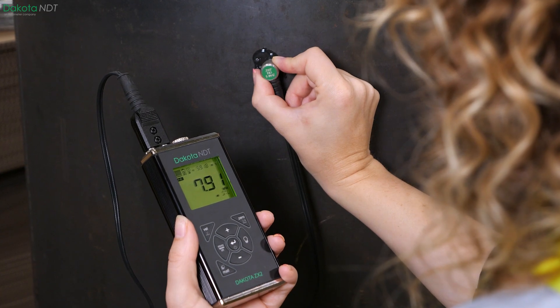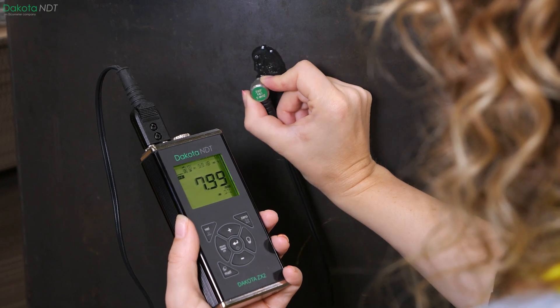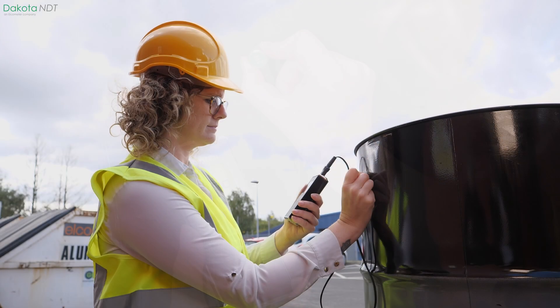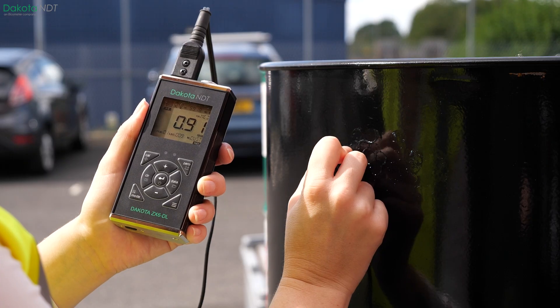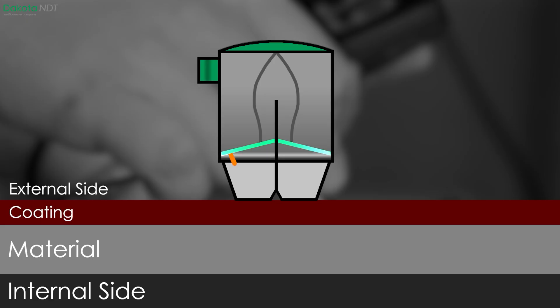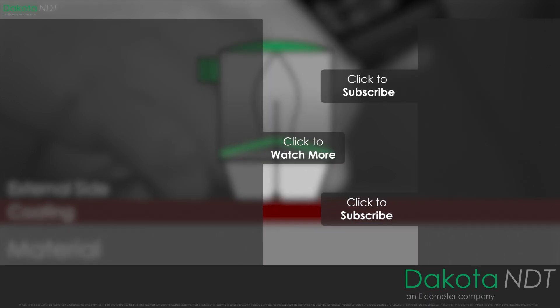While all ZX gauges share the pulse echo mode for basic material testing, the ZX6 and ZX6DL differentiate themselves by including echo echo measurement. This additional mode allows the ZX6 to measure just the thickness of a metal part, ignoring the thickness of the applied protective coating.